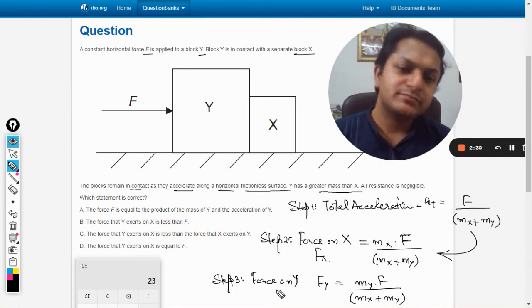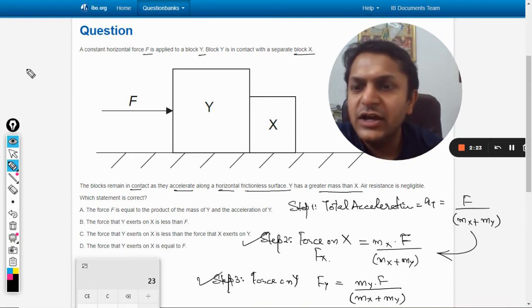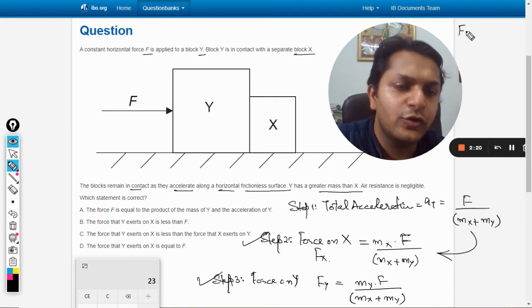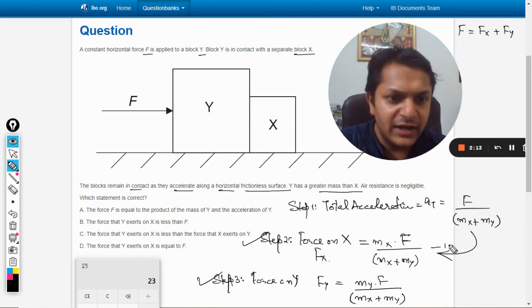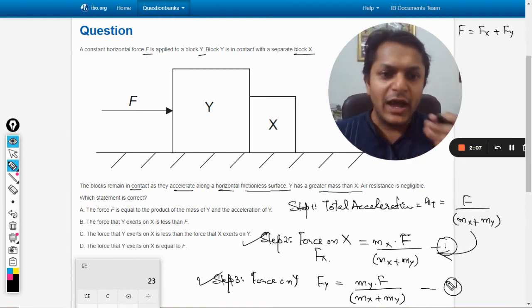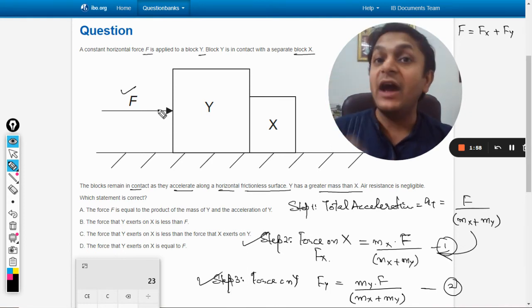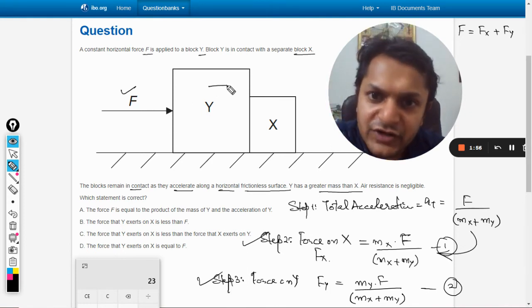So now one thing is evident. If you add the force on this and force on this, we can say that the total force F is equal to force on X plus force on Y. You see this value, that is one, and this two, when we add them acceleration is common so m_x plus m_y will be added together, so F will be coming out to be equal to F. So it means that this force F in our diagram is actually divided into two parts. The first part will be force on Y and the second part will be the force on X.